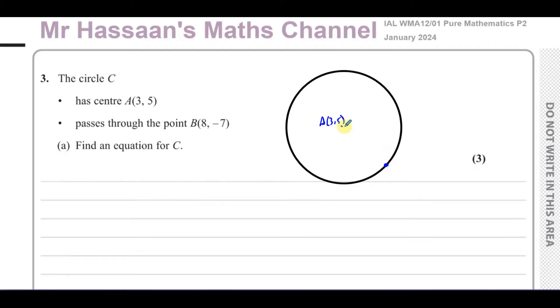I know (8,-7) is going to be to the right of A and below A — that's going to be B(8,-7).